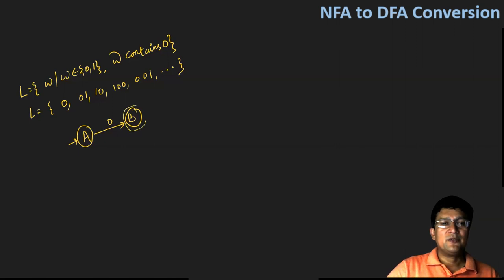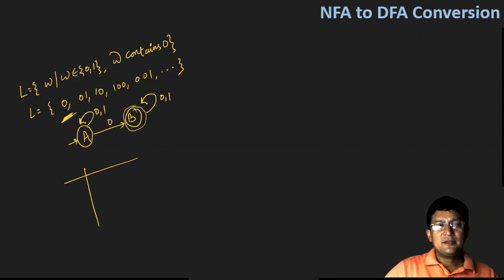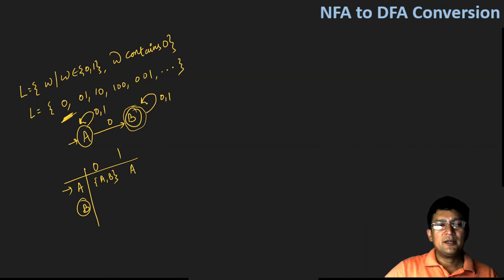This is the automata — the simplest automata drawn for the string zero. If I get zero and one at the end, I should remain at the final state only, since we've already accepted zero. And at the start, if I get zeros and ones, I should remain at the start state only. If I get a zero, I move to the final state, which is B. The NFA has symbols A and B, where A is the start state and B is the final state. On A with zero, I can move to A or B. On A with one, I remain at A. On B with zero, I go to B. On B with one, I go to B. This is the NFA transition table.